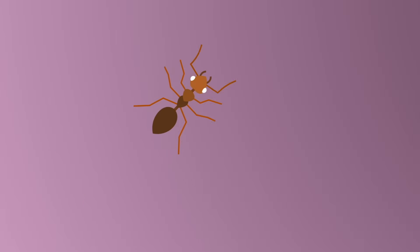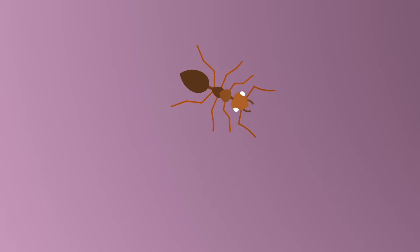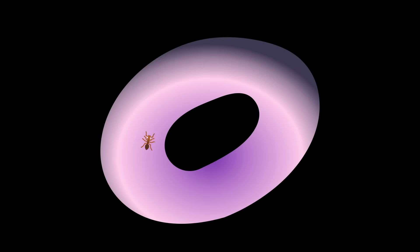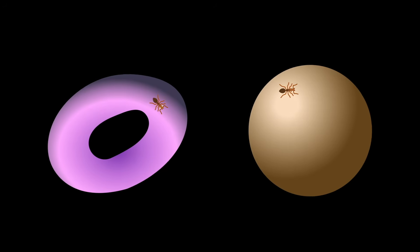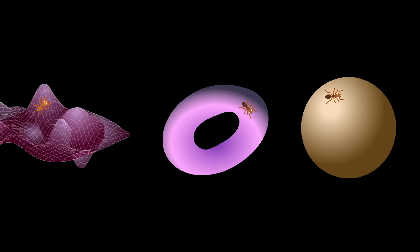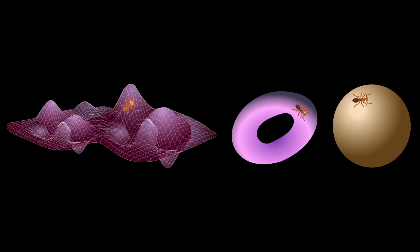Imagine you are an ant walking around a giant, weirdly shaped object — say, the surface of a donut, or a globe, or something funkier. Even if the shape is complex and curvy, up close it always feels like you are walking on a flat, ordinary two-dimensional space.